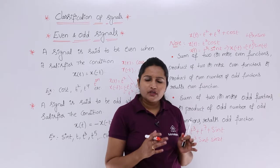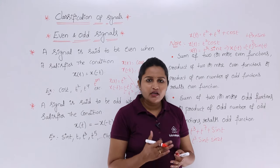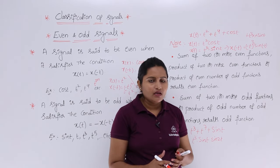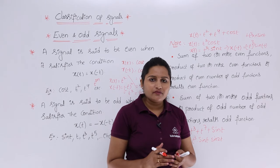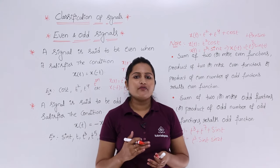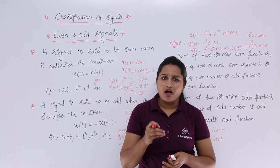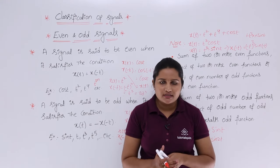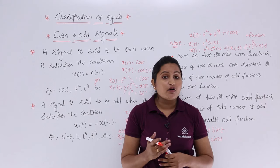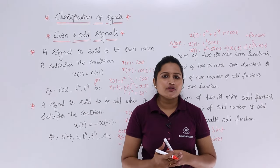To summarize: sum of two or more even functions, product of two or more even functions, or product of an even number of odd functions, will result in an even function. Sum of two or more odd functions or product of an odd number of odd functions will always result in an odd function. This is about even and odd functions in signals and systems; in the next class we will discuss even and odd components, which is very important with many problems related to that.